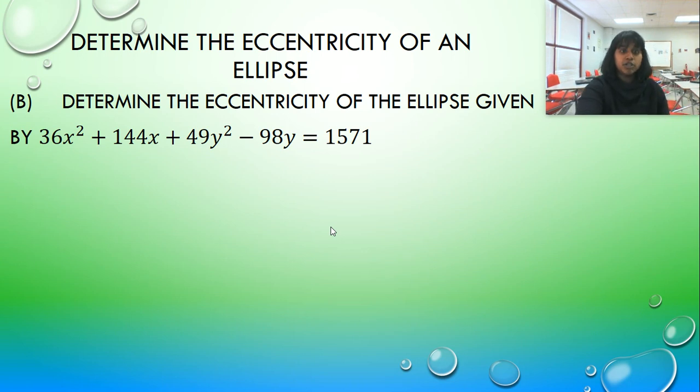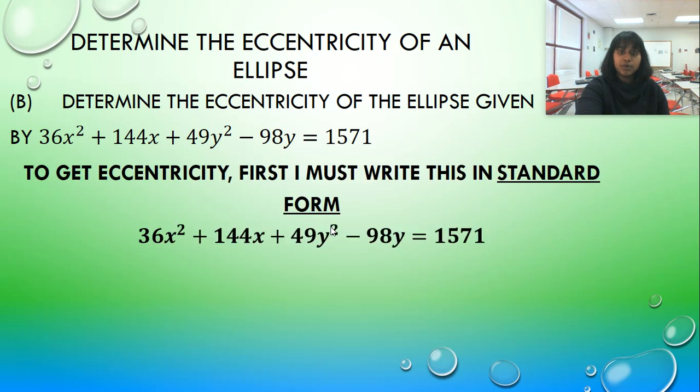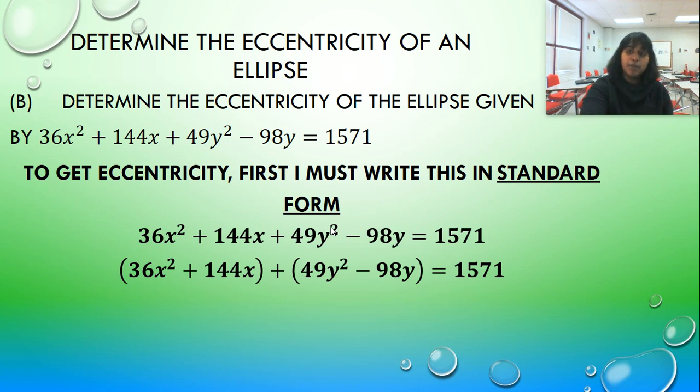And a lot of y'all still struggle with that. So I thought one more example might be good. First thing I do is I separate my x's from my y's. And if I had to, I'd move my constant over. Now I need a perfect square. But to perfectly square it, let's go ahead and deal with the chaos that is this. Because we can factor. There is a commonality between 36 and 144 and 49 and 98.